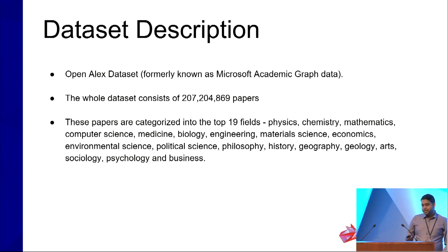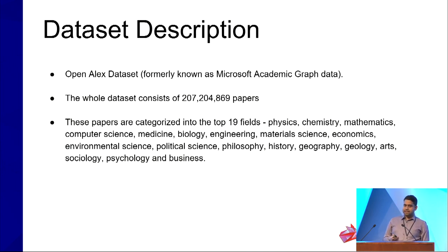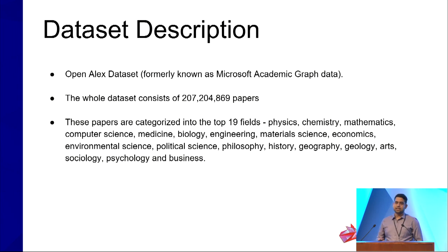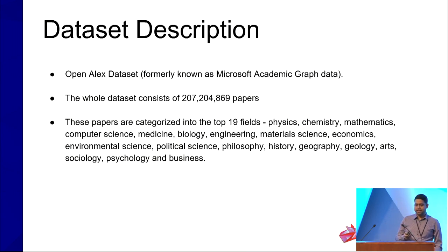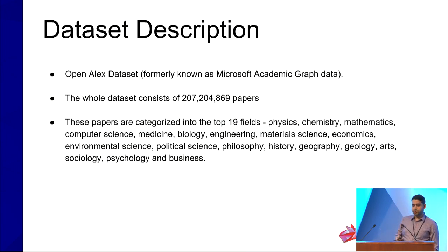Towards this objective, we collected data from the OpenAlex dataset, which was formerly known as Microsoft Academic Graph. The whole dataset consists of around 207 million papers, and these papers are categorized into 19 top-level fields, ranging from physics, chemistry, mathematics, computer science, medicine, and biology, to fields like arts, sociology, psychology, and business.